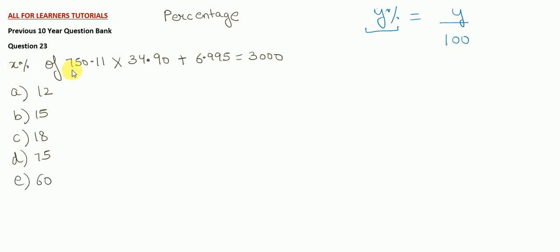Now, let's solve this thing. X percentage of 750.11 into 34.90 plus 6.995 is equal to 3000. This seems to be difficult but it is very simple. Just follow our method which I have told you. 750.11 you can write it as 750. Of is multiplication. 34.9 you can write it as 35 plus 6.9 is 7. It's 3000.